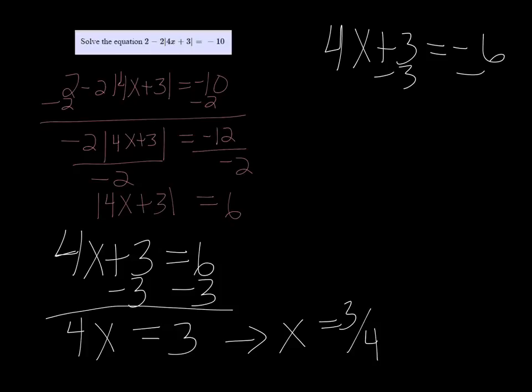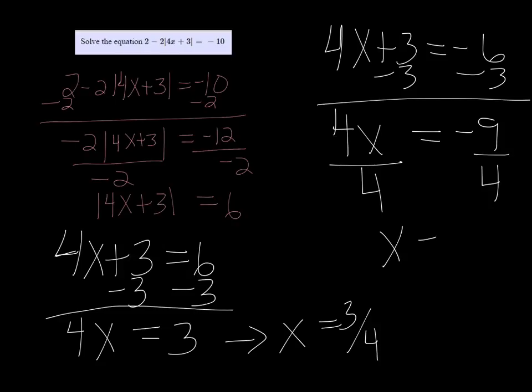And the other one, subtract 3, and I get 4x equals negative 9. And divide by 4 on both sides, so x is equal to negative 9 fourths. So those are the two answers.